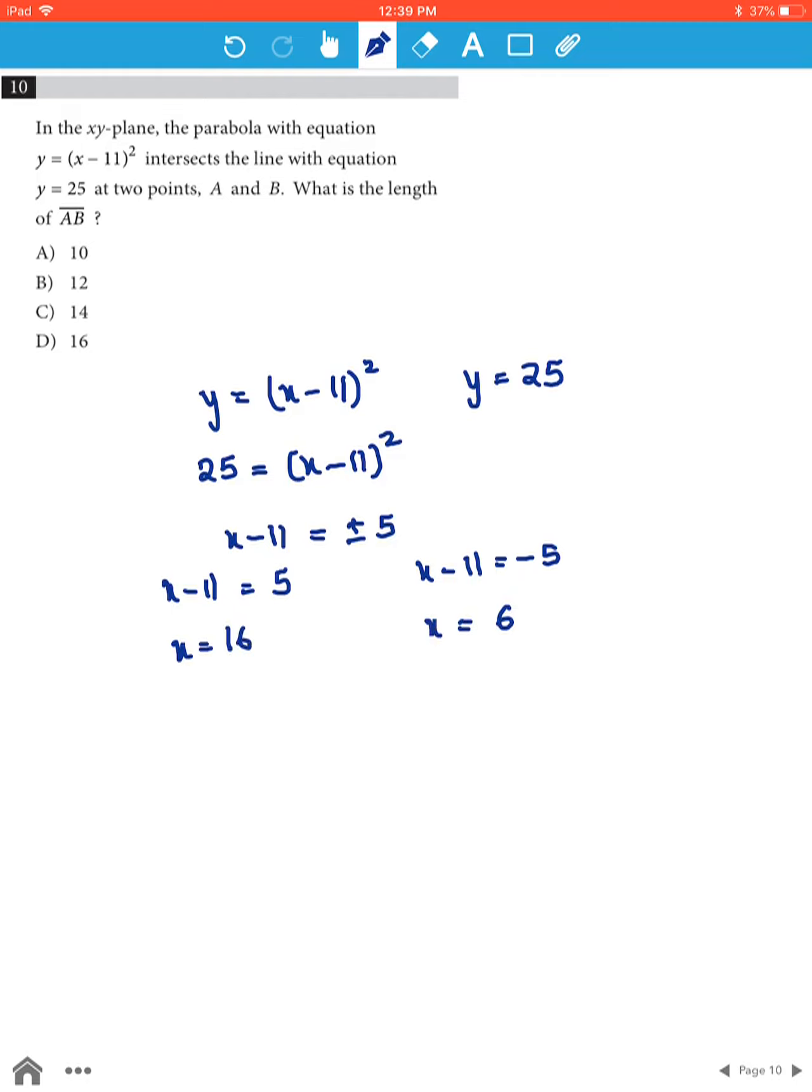Now, to find the y coordinate, we know that both of them intersect at y = 25, so we don't need to find the y coordinate. The coordinates of these two points will be (16, 25) and (6, 25).